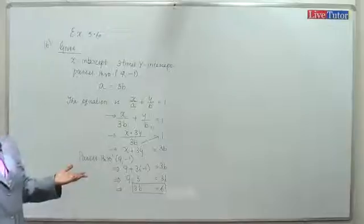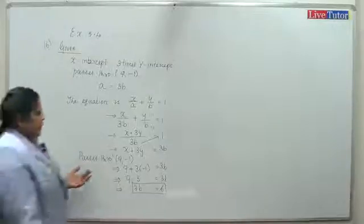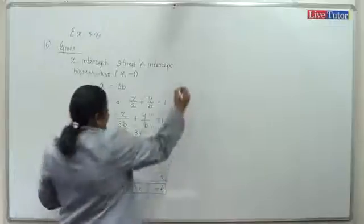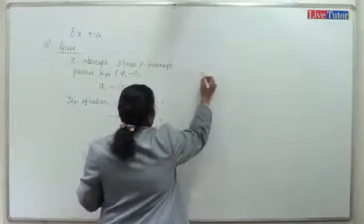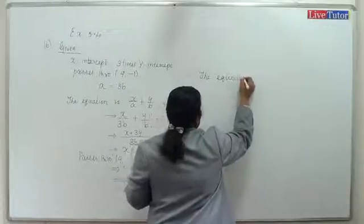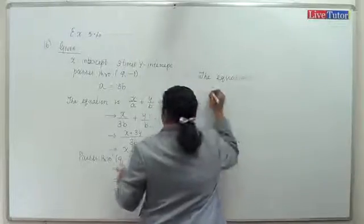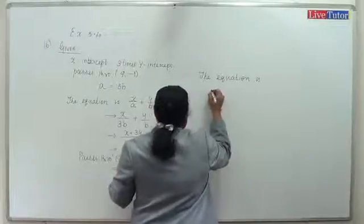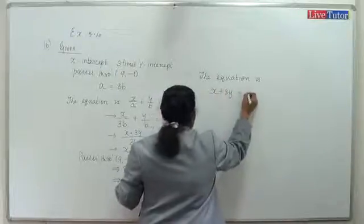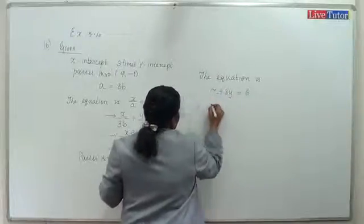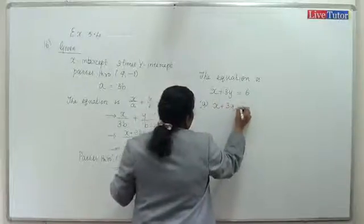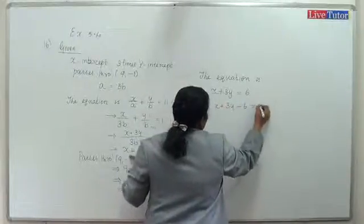3b value is equal to 6, therefore b equals 2 and the equation is x plus 3y minus 6 equal to 0.